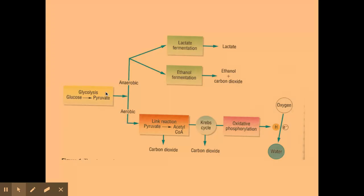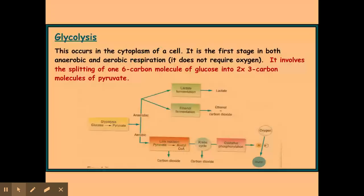So glycolysis, the main thing we need to know here is it occurs within the cytoplasm of the cell, so not actually in the mitochondria at all. It's in the cytoplasm of the cell and it involves splitting one six-carbon molecule of glucose into two molecules of pyruvate, which are then actively transported into the mitochondria and used for the next part, which is the link reaction in aerobic respiration.